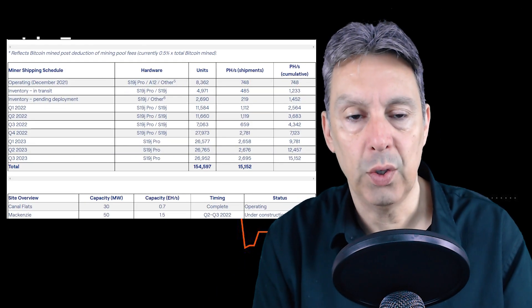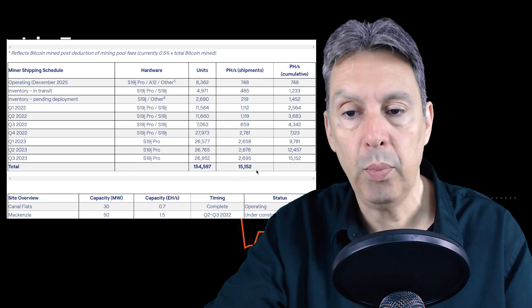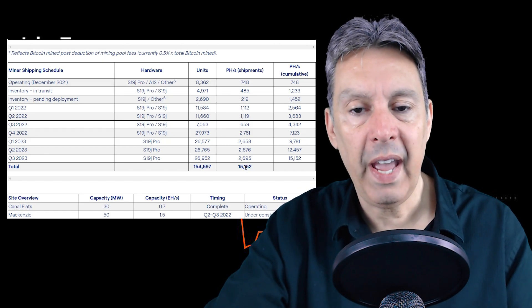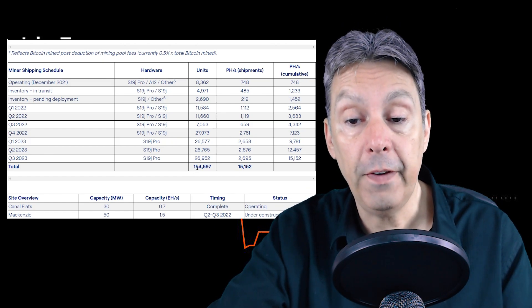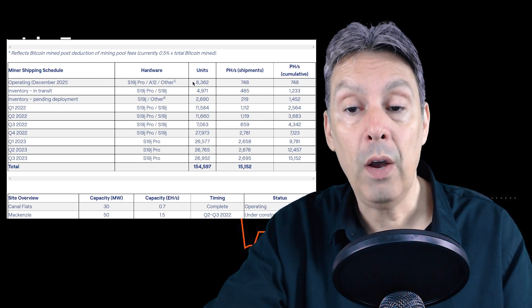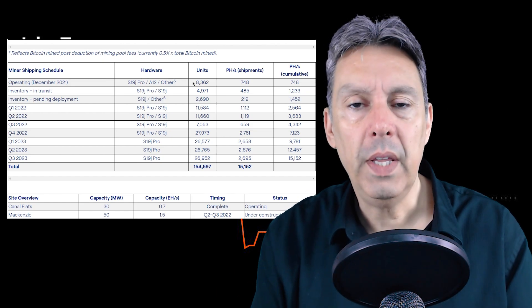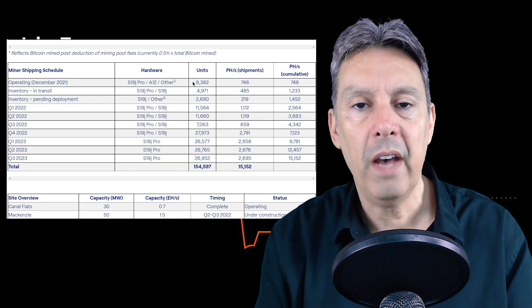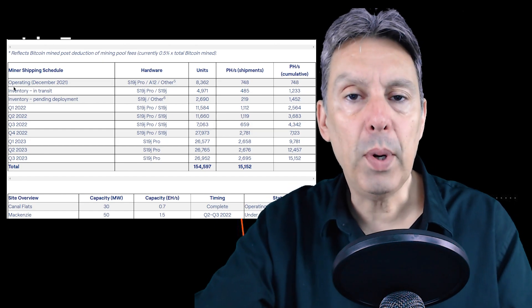Now here's their big schedule. In order to reach their goal of 15.152 or 15.2 exahash of bitcoin mining computing power, they have to stick to this schedule. That is going to require 154,597 machines, of which right now they have 8,326 that are operational. They have to approximately 18x the number of machines that they have up and running over the next two years in order to reach this goal, and they've put a timeline right here of how they plan to do that.